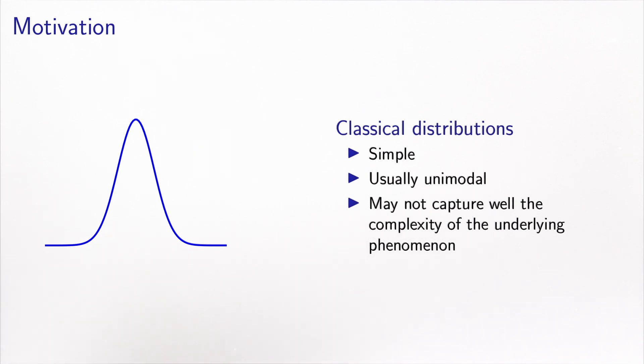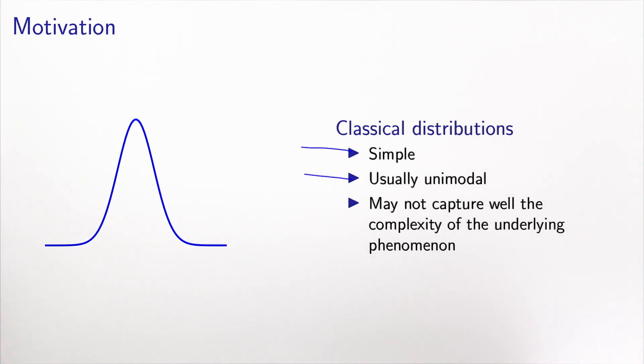So what is the motivation for deriving new models? Well, the classical distributions we are using so far, typically the normal distribution or the extreme value distribution, are usually very simple. In particular, they have one mode, and the normal distribution is even symmetric. But these features — symmetry and unimodality — that simplify significantly the mathematical formulation of our models, may not necessarily capture the complexity of the phenomenon we would like to model. This is why we would like to go beyond that and have something more complex.